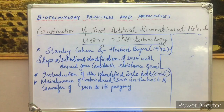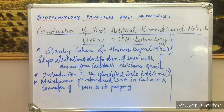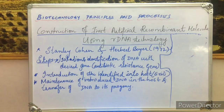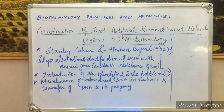In 1972, Stanley Cohen and Herbert Boyer constructed the first recombinant molecule. They linked the antibiotic resistance gene to the native plasmid of Salmonella typhimurium — a bacteria. The bacteria possesses plasmids, and these plasmids have certain phenotypic characters such as antibiotic resistance. The antibiotic resistance gene of a plasmid of one bacteria was isolated and linked with the native plasmid of Salmonella typhimurium.